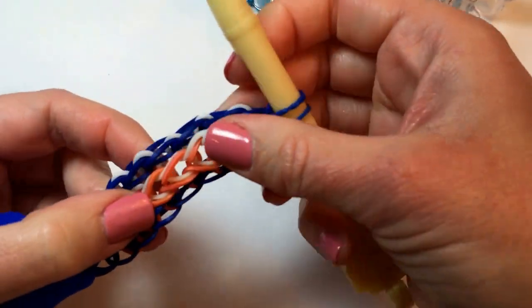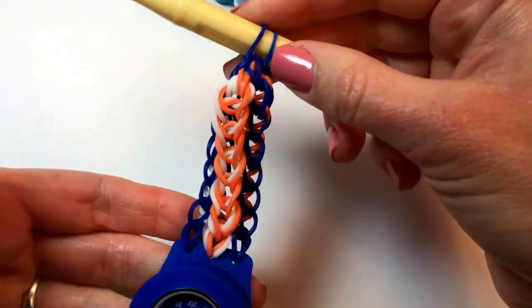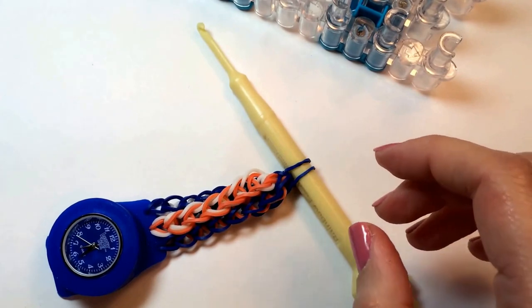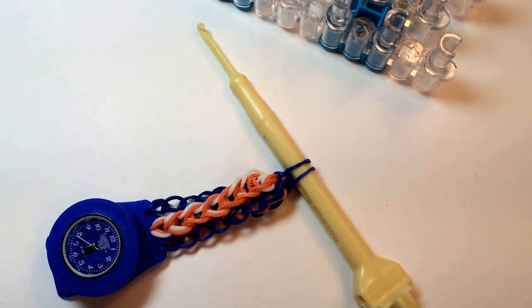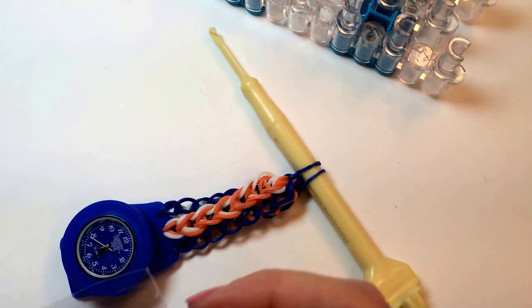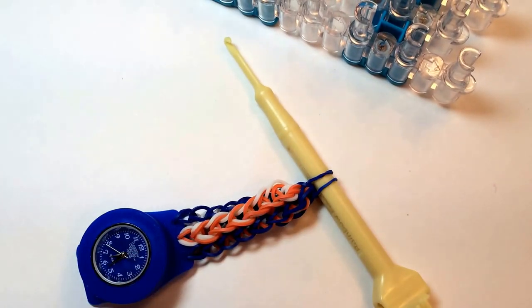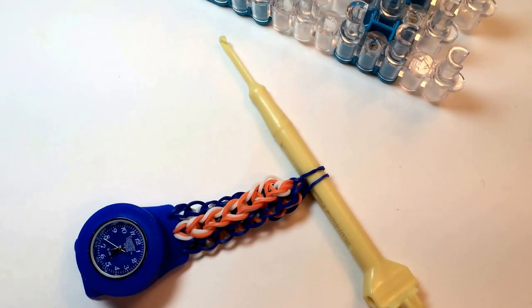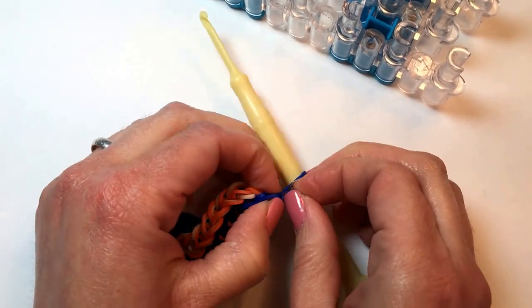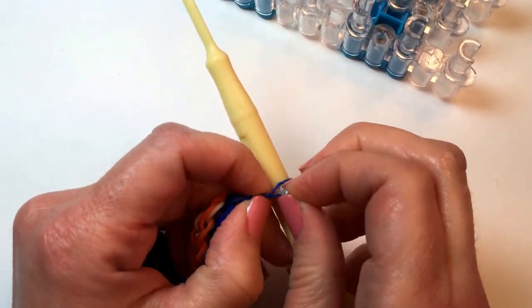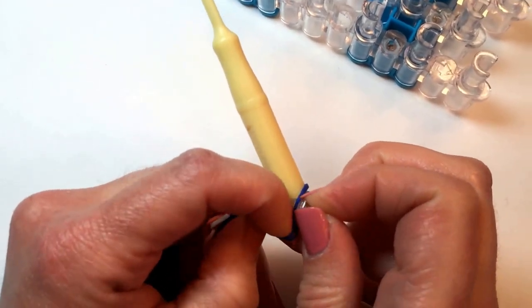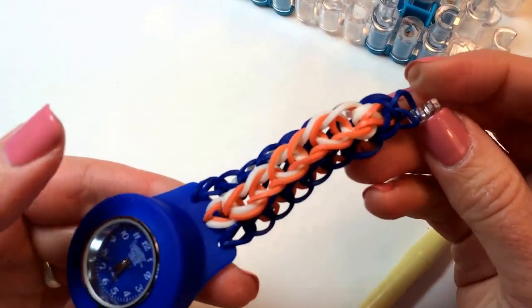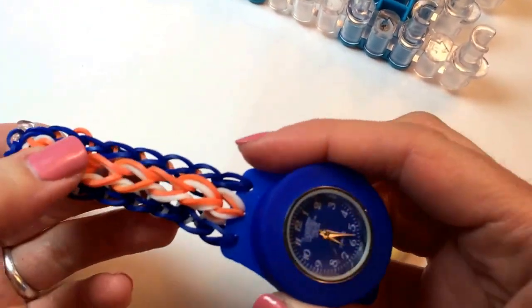So now we have half of our watch band created. We will want to place a C-clip right here where the hook is to hold this together while we work on the other side. Let me pull one of these C-clips out. And then we can secure it. So we stretch that out, make sure we get both sides of that rubber band into the C-clip. There we go. And now this is safe and secure for us to work on the other half of the watch.